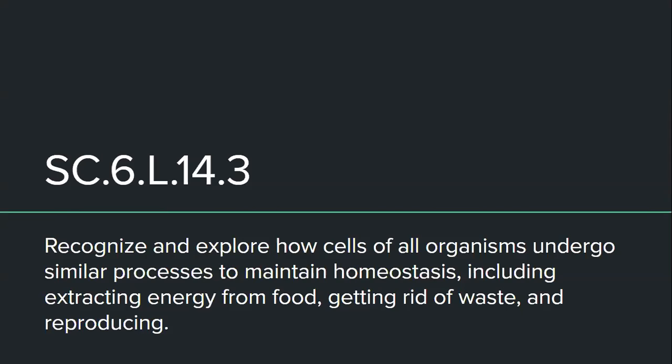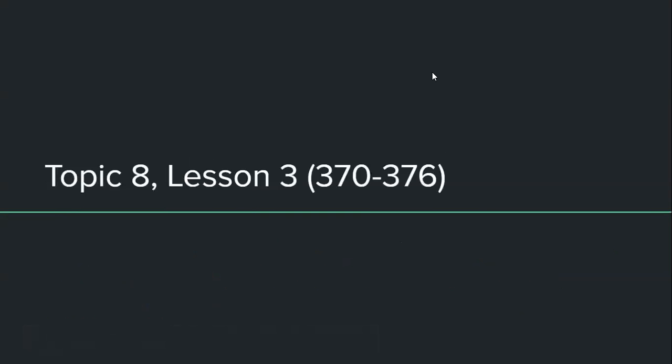So now we're going to move on to our next standard. This standard is going to be recognizing how these cells and organisms undergo similar processes to maintain homeostasis, including extracting energy from food, getting rid of waste, and reproducing. So we are now going to be on, if you have your textbook, we're going to be moving on to lesson three, topic eight, which is on page 370 to 376. If you do not have it, it is okay. I will always post enough information on here for you to be able to do your work.